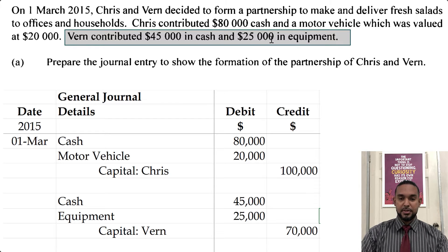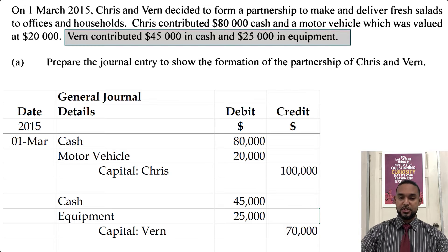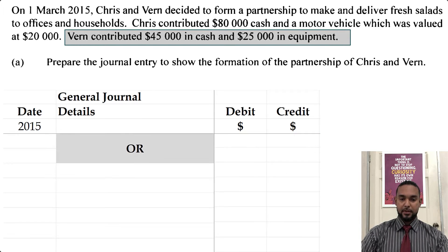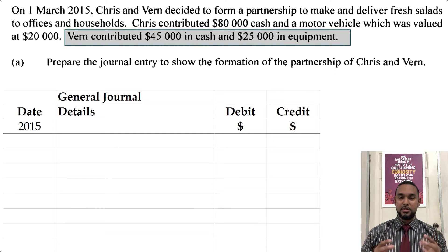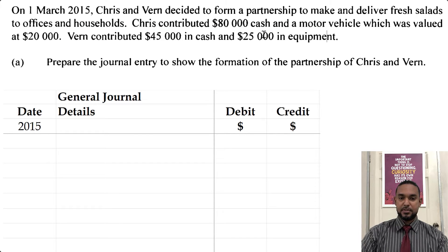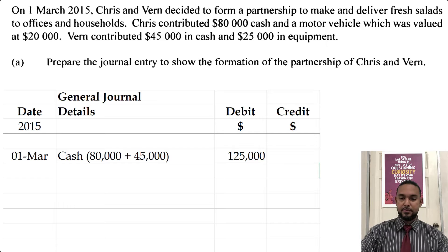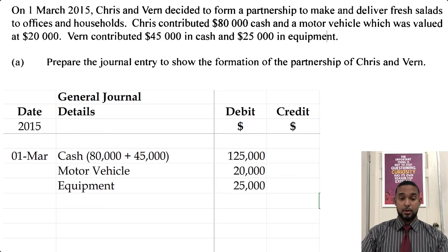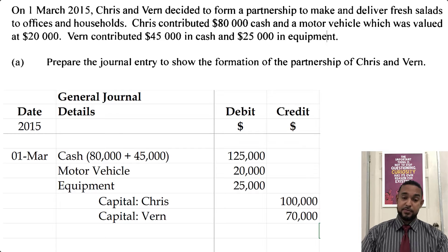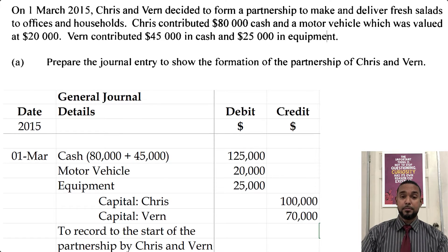I think you should be able to get away with that because they give you quite a large space. I'm also going to show you the single compound journal entry. That will entail all the debits to the assets first: an $80,000 cash and a $45,000 cash — so a single debit entry to cash for $125,000; motor vehicle at $20,000; equipment at $25,000; then Chris's capital at $100,000 and Verne's capital at $70,000.